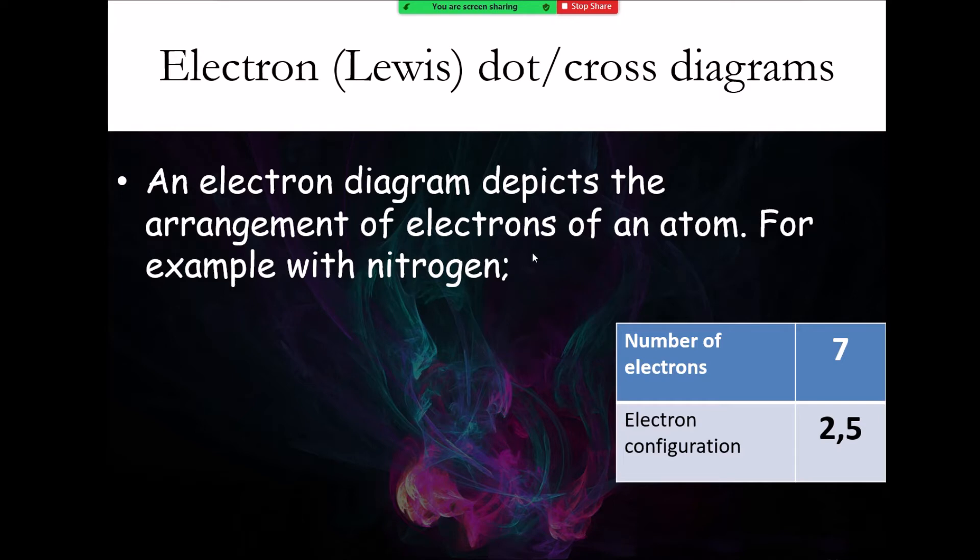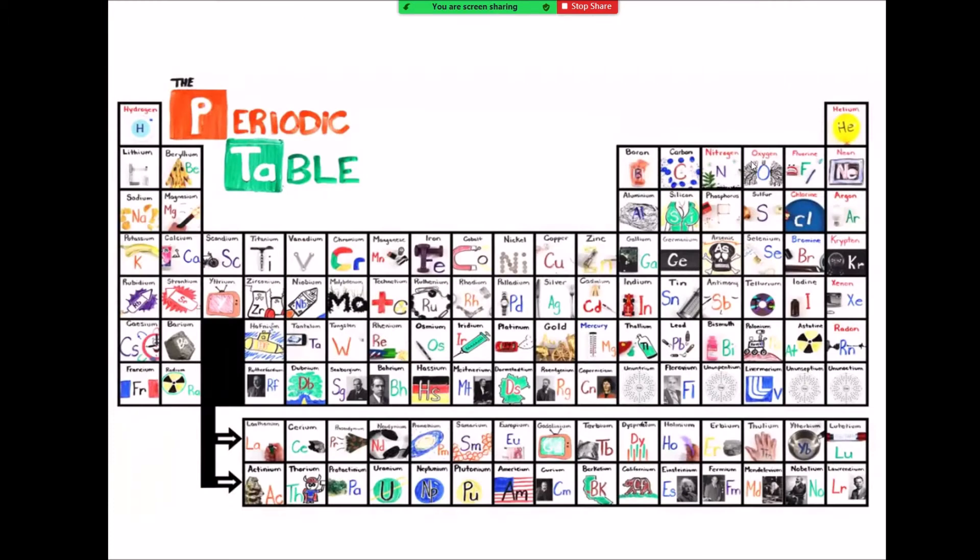Let's say nitrogen. It has seven electrons in total. This is easy if you have a periodic table in front of you. It has an electron configuration of 2 comma 5. Let me quickly show you where nitrogen is. Nitrogen is in this position here. If we count its atomic number, hydrogen is 1, helium is 2, 3, 4, 5, 6, 7. So nitrogen has atomic number of 7. If we have a look as well, it's in row number 2. So row 1, row 2. Depending on which row it's in, that'll tell us how many electron shells there are in nitrogen.